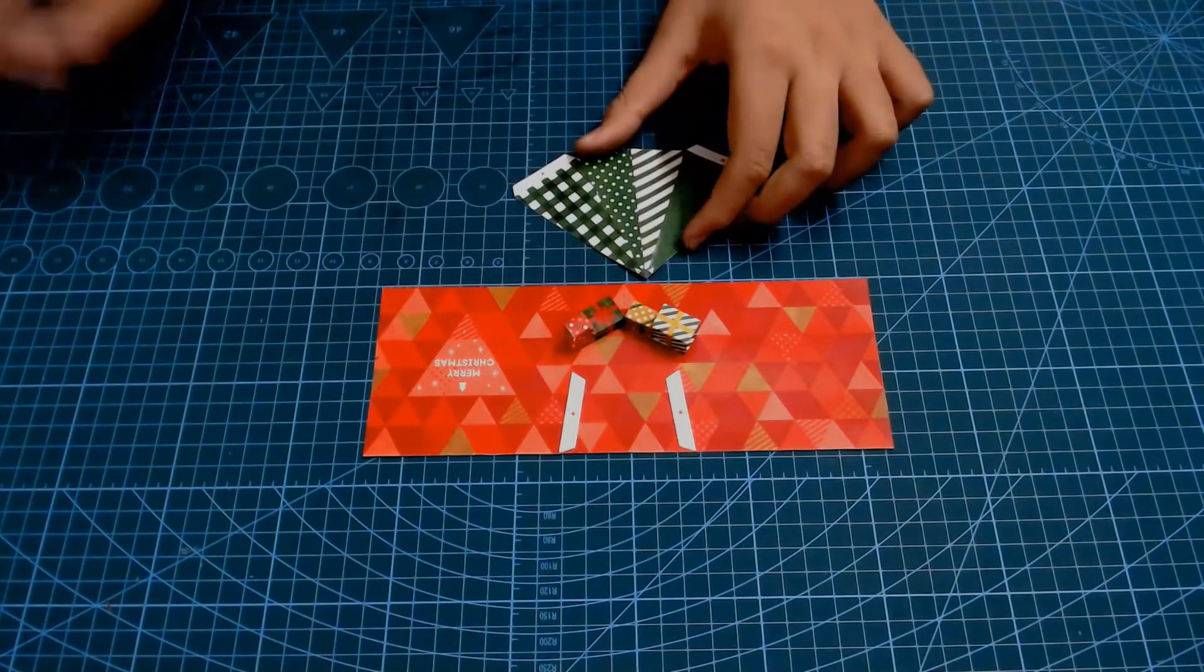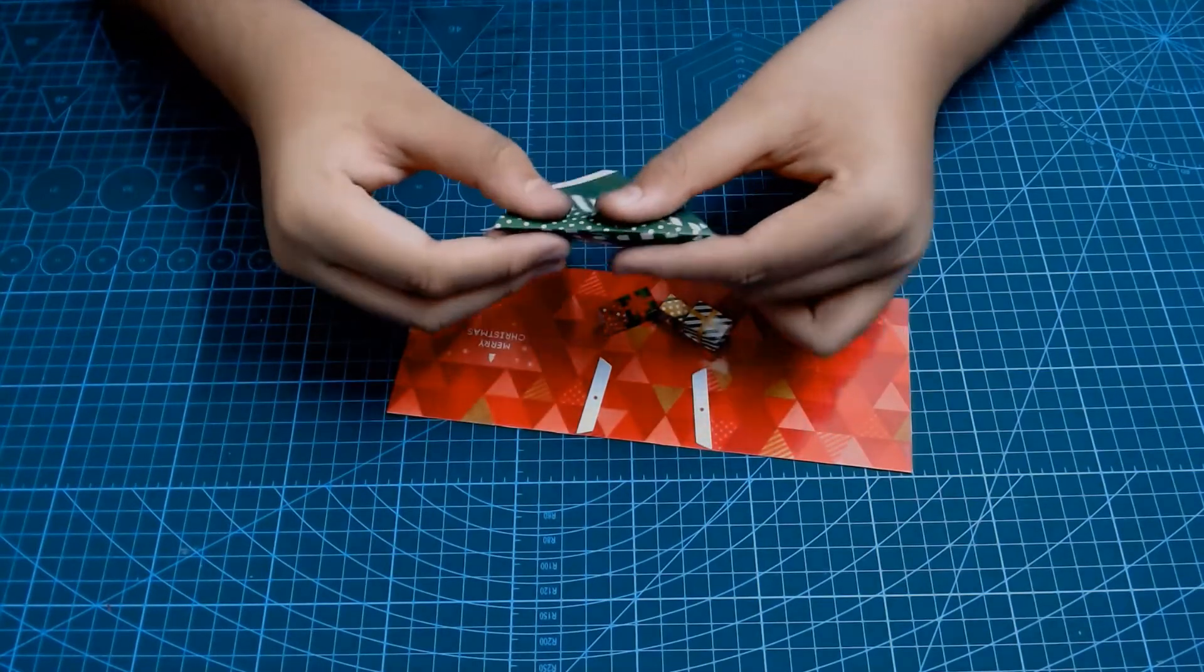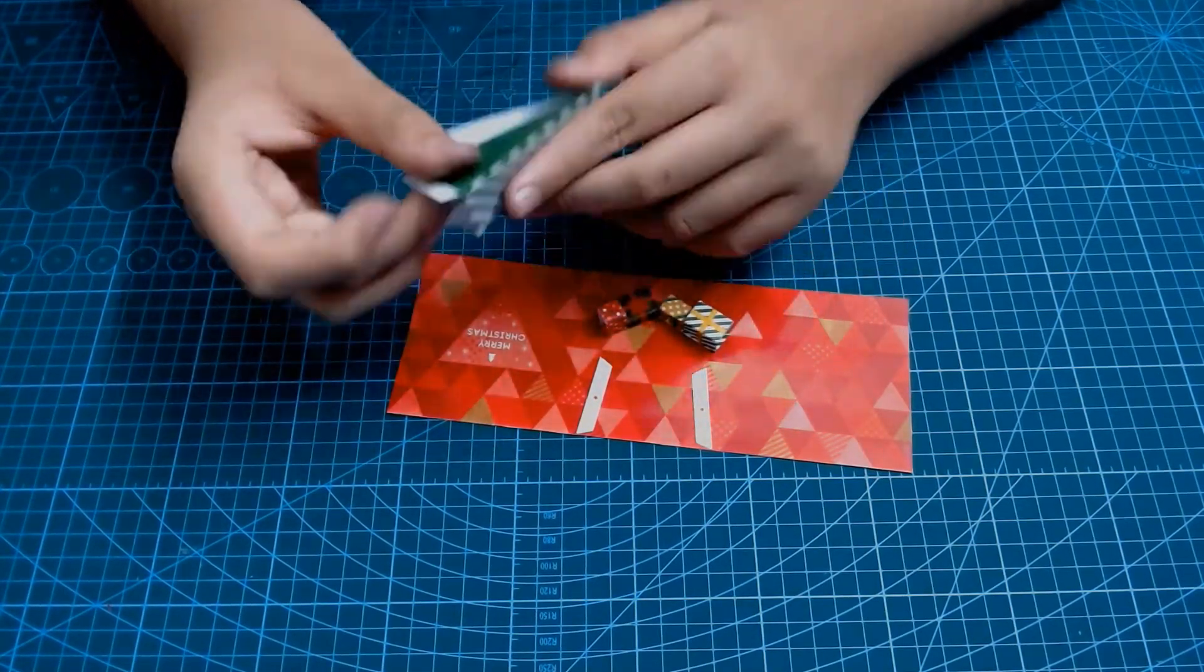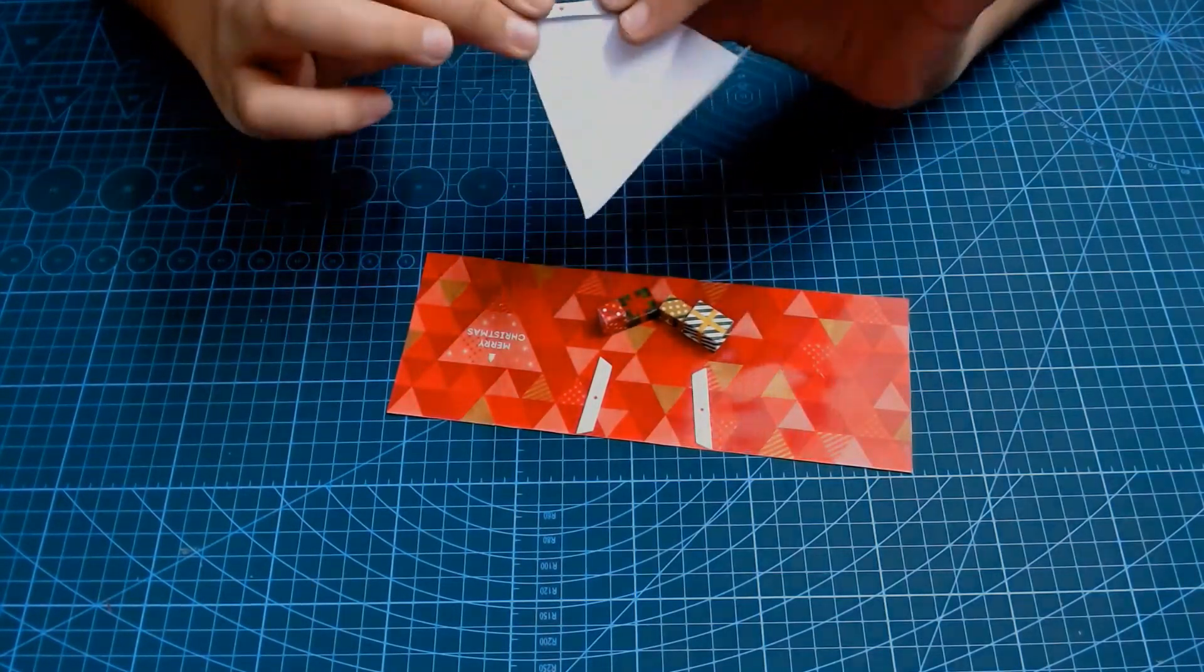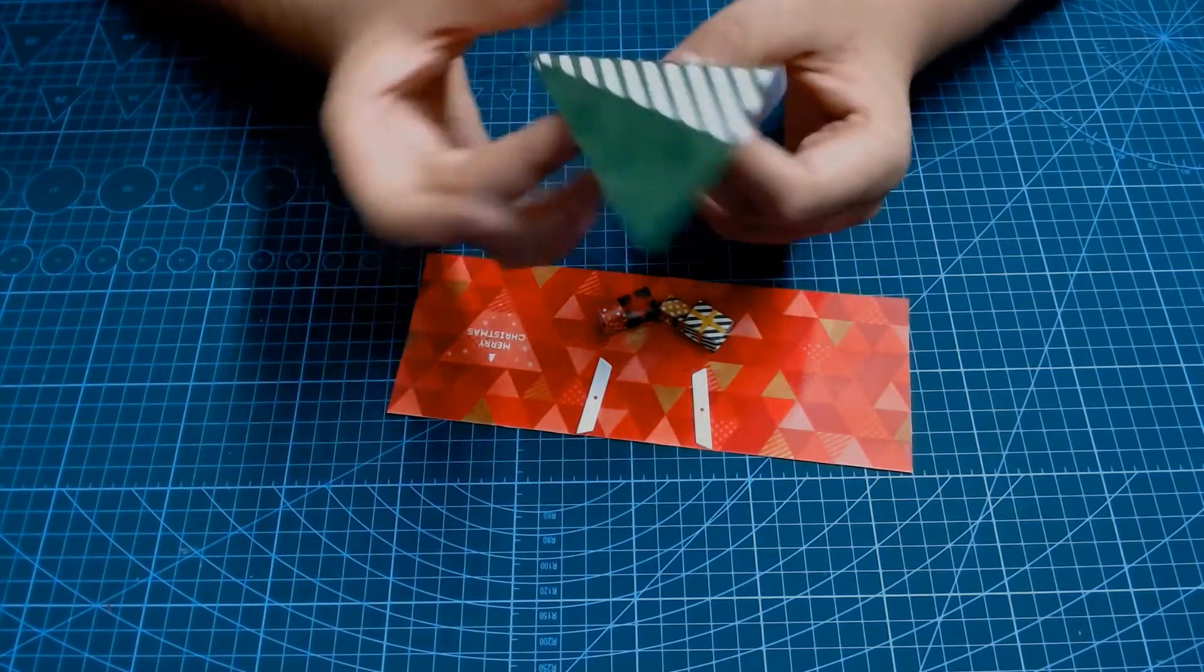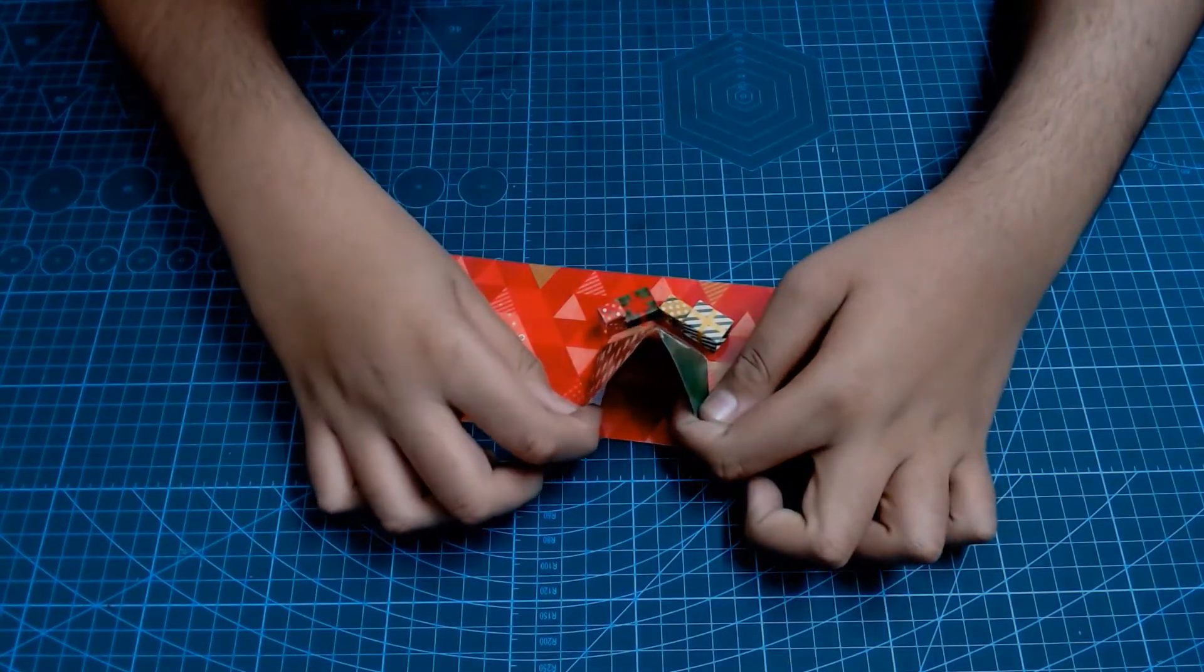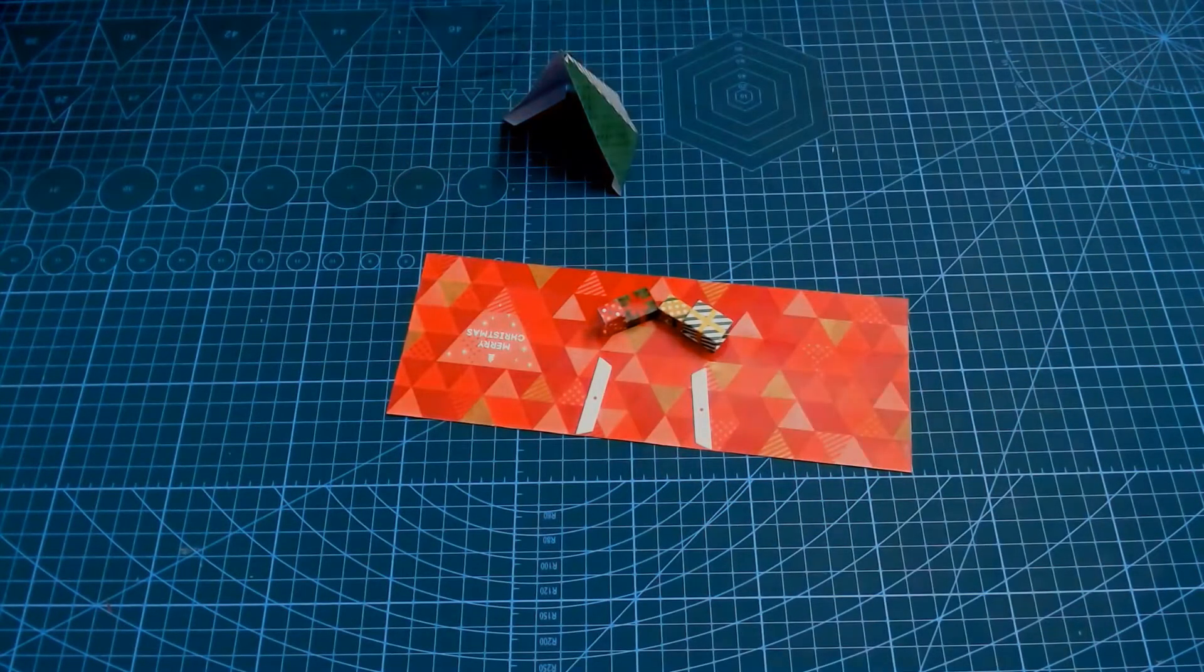Now, what we're going to have to do is we're going to have to take this tree and start folding on these lines, and then you can start folding these white tabs. Then what you're going to have to do is take your glue, apply glue on these two tabs and align these two tabs near the white spaces over here and over here.